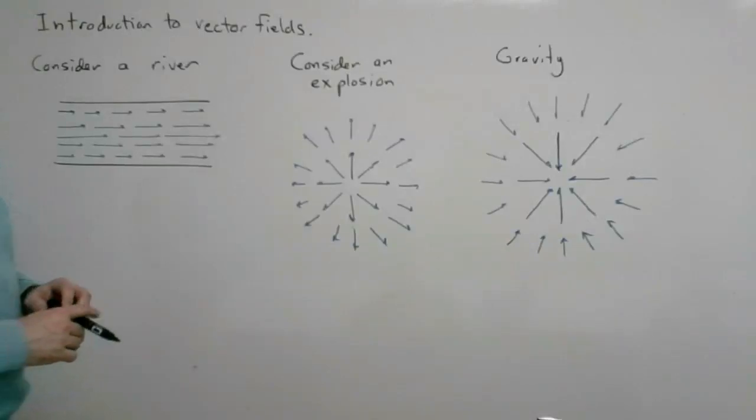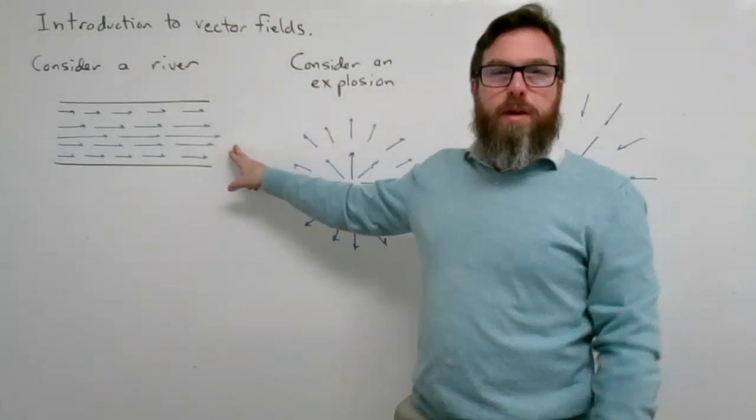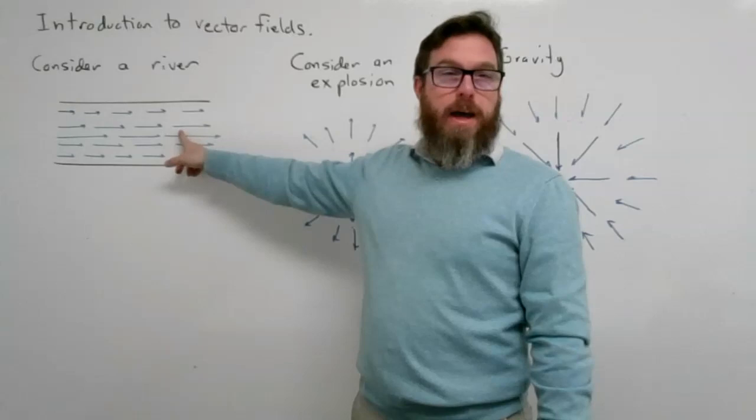I'm going to introduce vector fields by some common things we might already have a little intuition about. If we consider a river, we know a river has moving water in it, and the moving water can be shown by these oriented vectors.